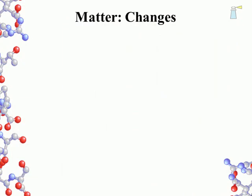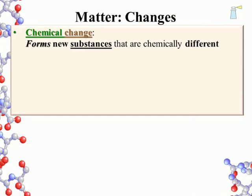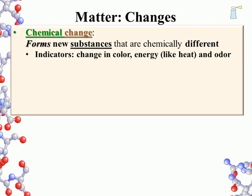Changes in matter — there are two types of such changes. The first is chemical change: new substances are formed that are chemically different from the original substances. Substance is a term that refers to a particular kind of matter with uniform or the same properties. Water is a substance since each drop of pure water has the same properties as every other drop. Indicators that a substance has undergone a chemical change include changing color, energy like heat or fire, and odor. Examples include burning, eating, rusting, and decay — in each of these changes, something new is formed.